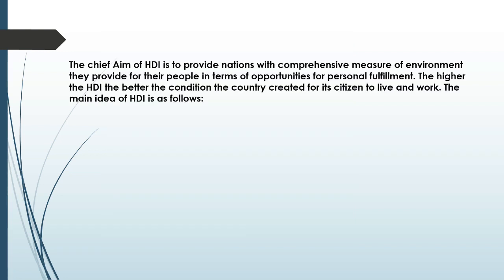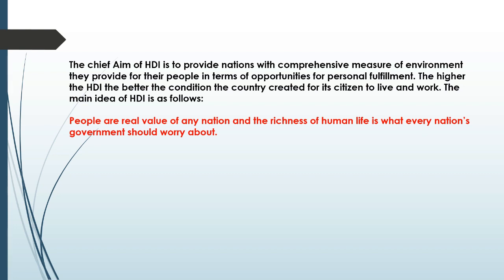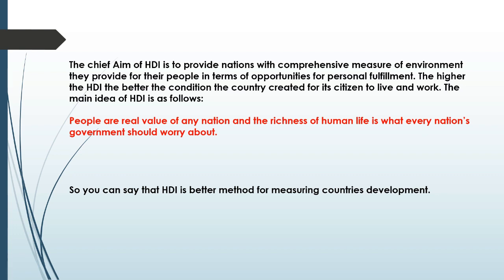What is the chief aim of HDI? The chief aim of HDI is to provide nations with a comprehensive measure of the environment they provide for their people in terms of opportunities for personal fulfillment. The higher the HDI, the better the conditions a country has created for its citizens to live and work. The main idea of HDI is that people are the real value of any nation, and the richness of human life is what every nation's government should be concerned about — it's about the quality of life the government is providing for its people.